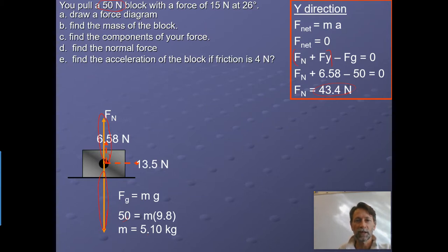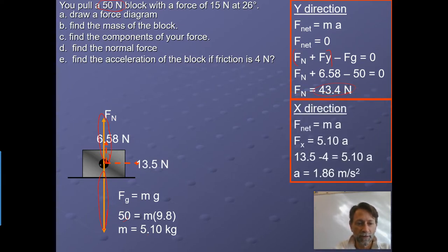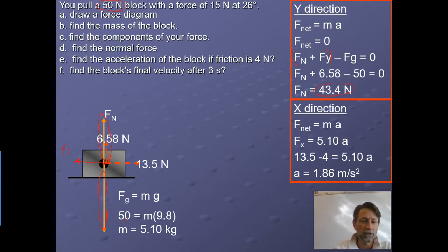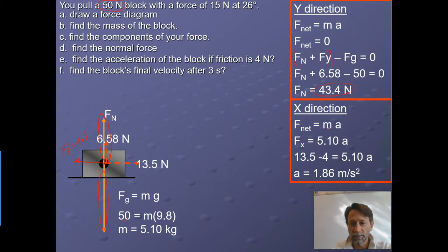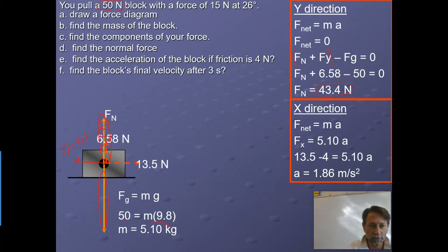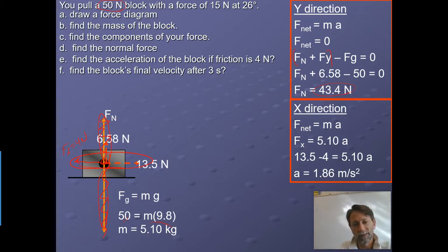Part E: find the acceleration if friction is 4 Newtons. Draw friction as a force pointing left, acting against motion. Set up F equals ma in the X direction: the X component of the pull is 13.5 Newtons to the right, minus 4 Newtons of friction to the left, equals 5.10 kilograms times acceleration. Solving that gives the acceleration of the block using Newton's second law in the X direction.